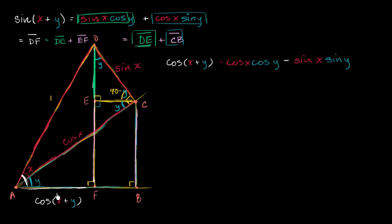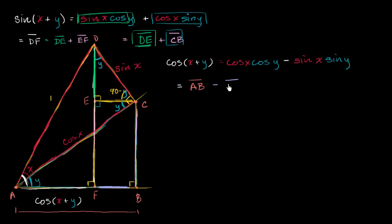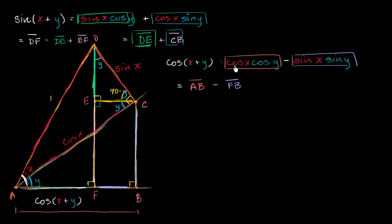Let's think about how we can get that. Given the other right triangles in this diagram, AF is equal to the length of segment AB — this entire segment — minus the length of segment FB. From the way our angle addition formula for cosine looks, you might guess what AB and FB will turn out to be. If we can prove that AB equals cosine x times cosine y, and FB equals sine x times sine y, then we are done, because cosine of x plus y equals AF, which equals AB minus FB.